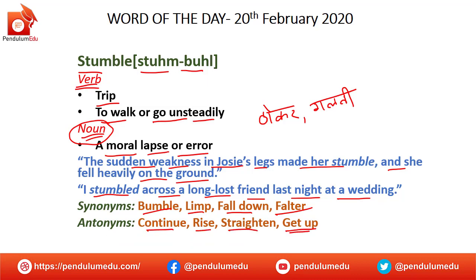Thik hai, toh friends, humne aaj ka jo word of the day hai, us mein word pada stumble. Yeh verb aur noun dono ki tarah use hota hai. Iska meaning hai trip, to walk or go unsteadily, aur noun ki tarah jo used as a noun, iska jo meaning hai, a moral lapse or error.